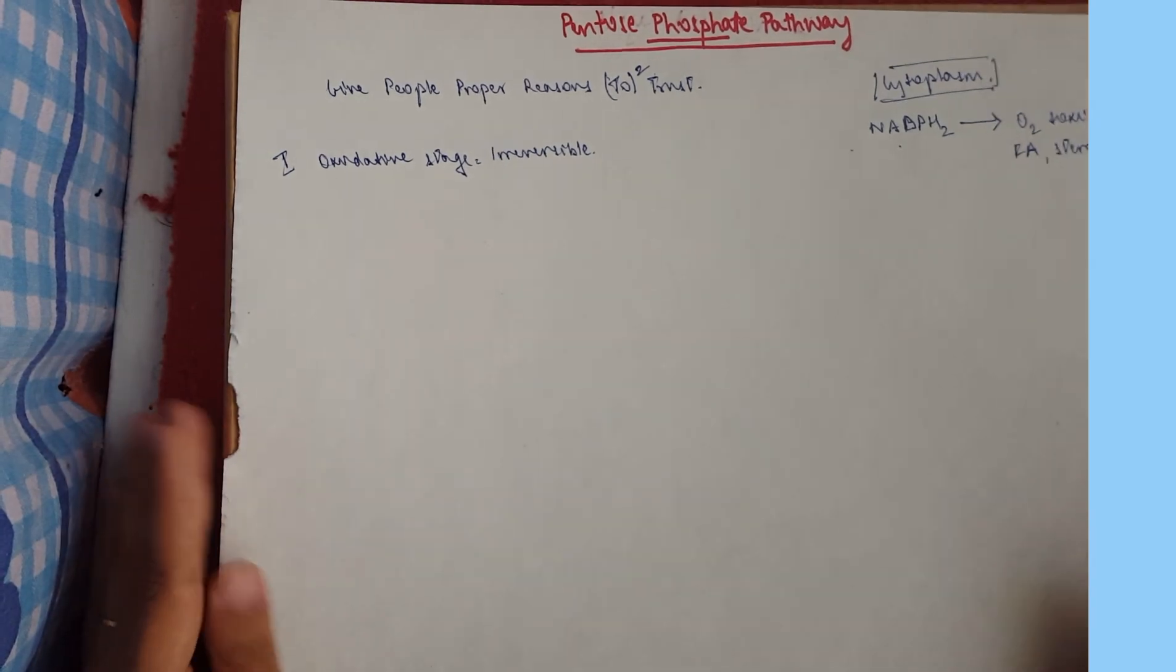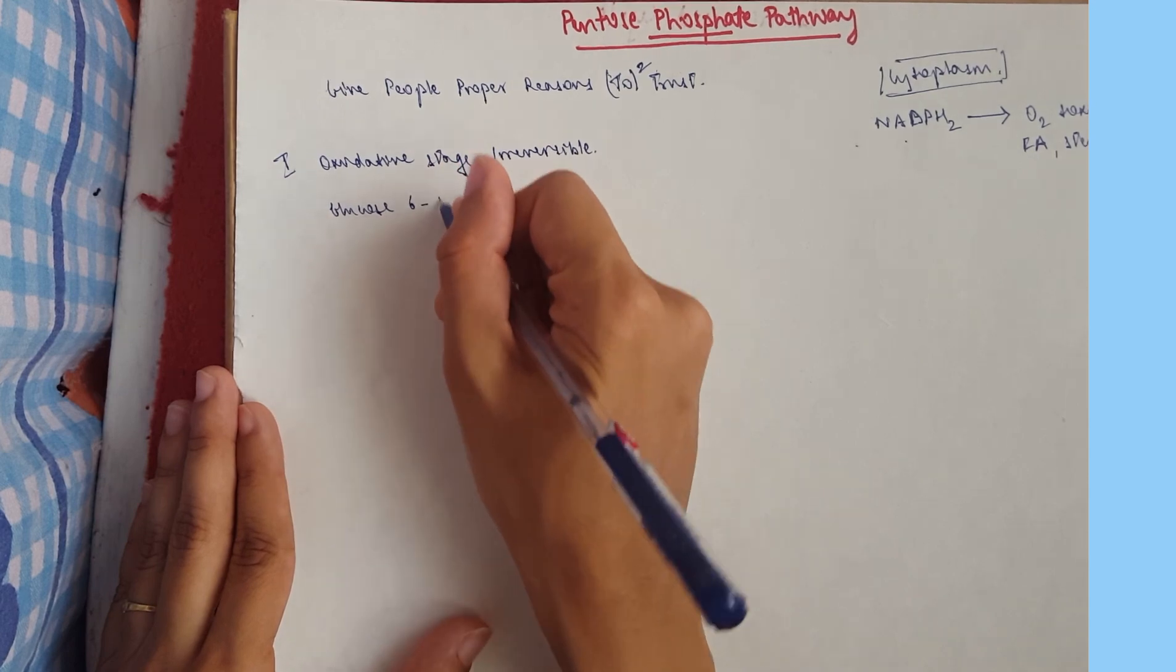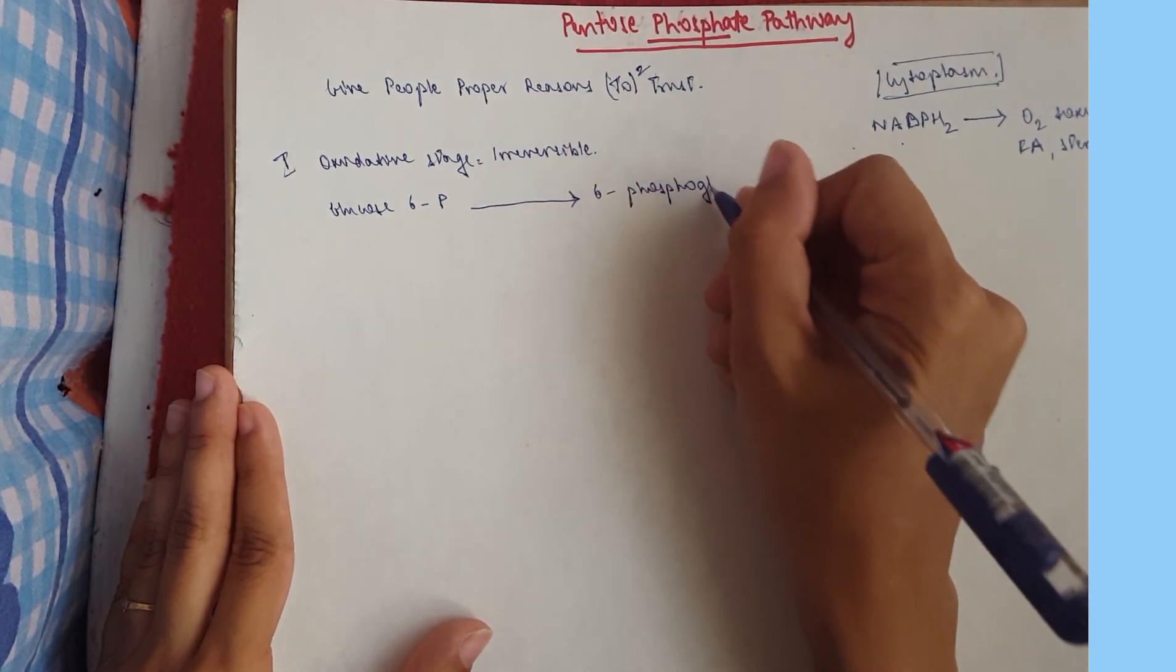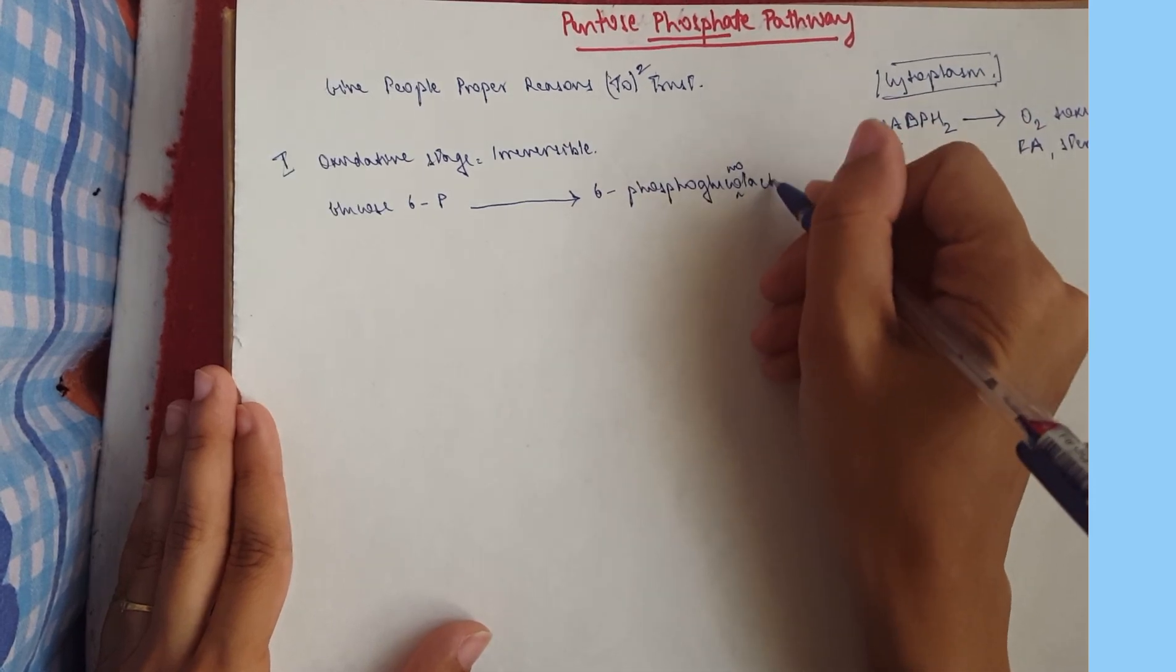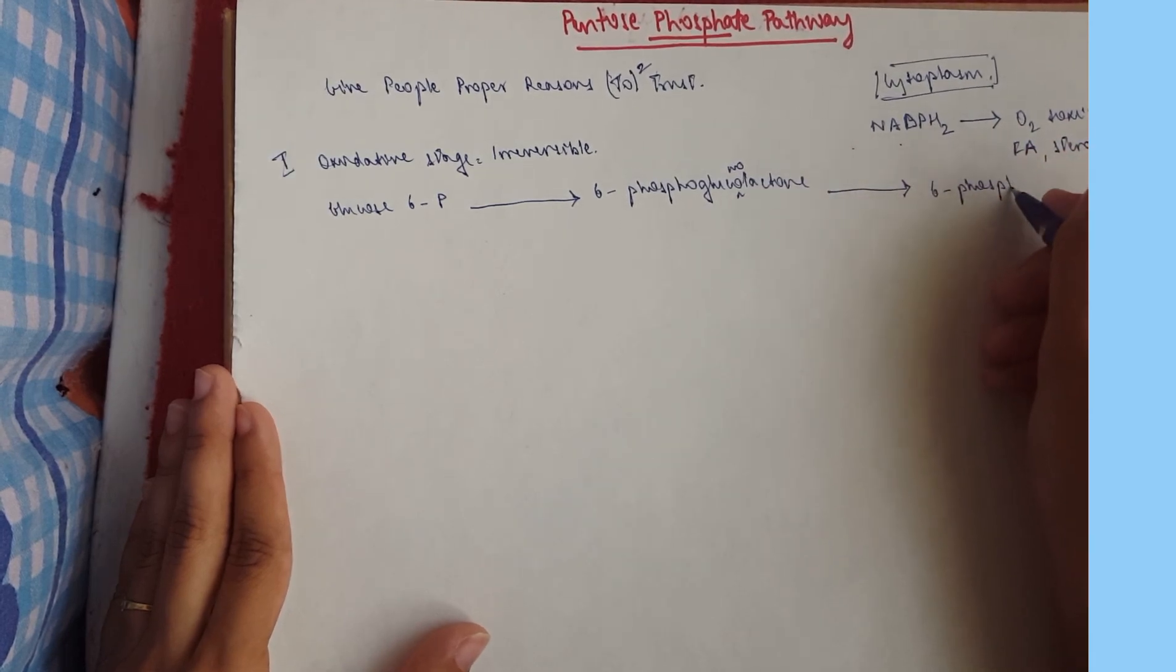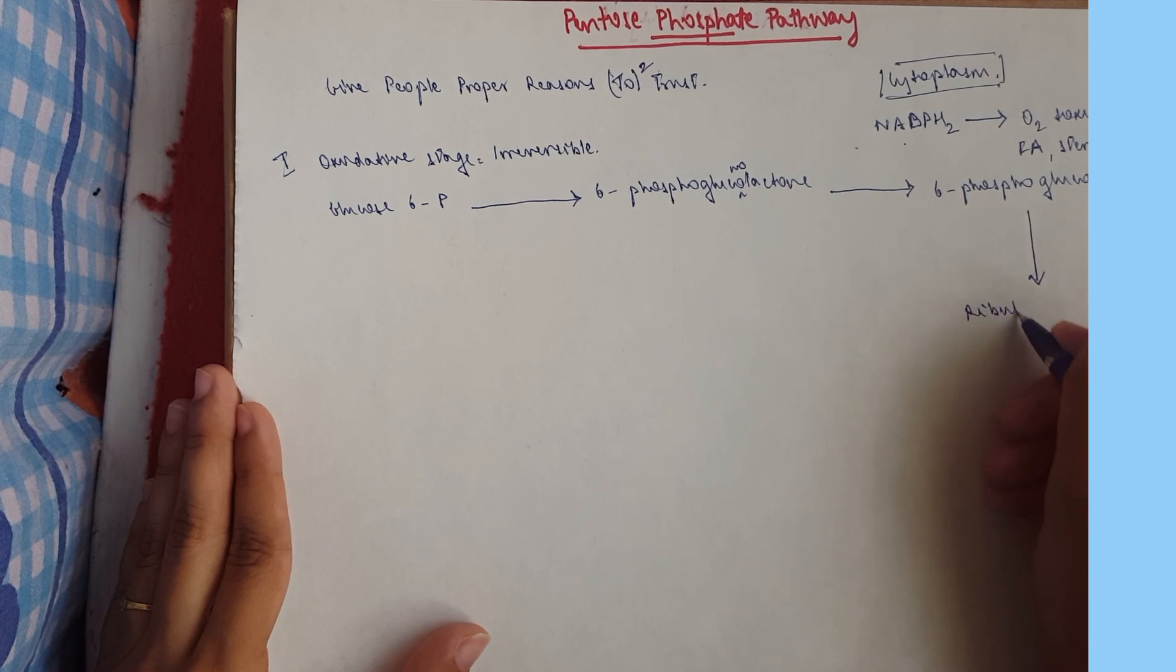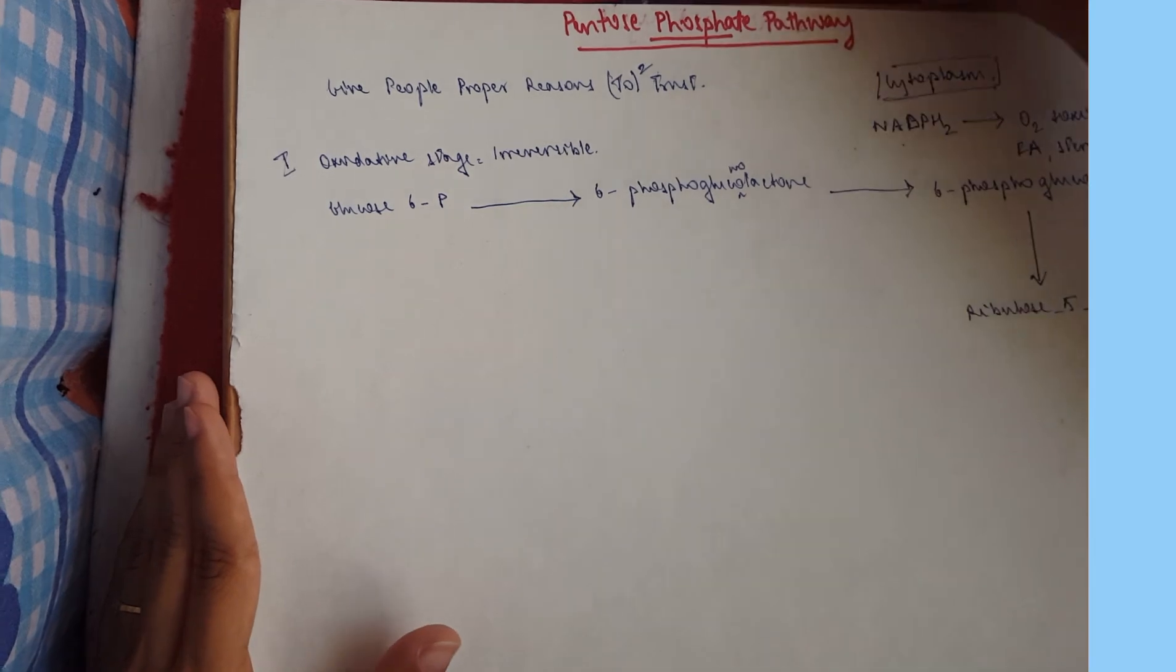So we've got, you start with glucose 6-phosphate that gives us 6-phospho-gluconolactone, that one then gives us 6-phospho-gluconate which gives us ribulose 5-phosphate.